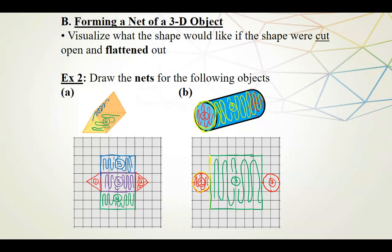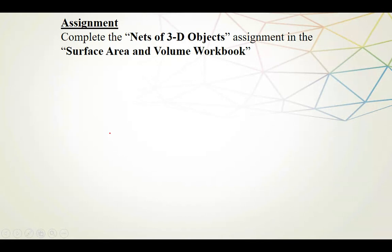It's worth pointing out that there are lots of different ways to draw nets of three-dimensional objects. I drew one net for the cylinder and one for the triangular prism, but there are a variety of different nets you could draw that would still fold together to give you that three-dimensional object. That's it for this lesson. Complete the assignment in the surface area and volume notebook — it's called 'Nets of Three-Dimensional Objects.' In the next lesson, we'll look at calculating the surface area of these 3D objects, starting with the right rectangular prism.